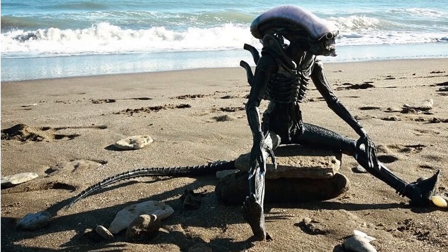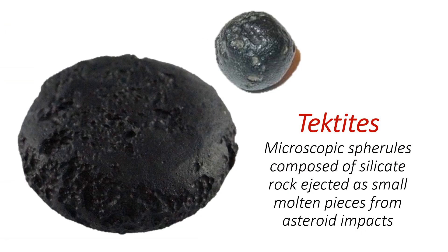But when you do find cosmogenous sediment, it can be an incredibly important discovery. Some of the most important cosmogenous sediment consists of tektites — microscopic spherules composed of silicate rock, formed from small molten pieces ejected from asteroid impacts. Where there is one, there are usually many. Scientists have used tektites to look for evidence of ancient asteroid impacts that could have been responsible for mass extinctions on Earth — offering clues to some of the most important events in Earth's history.